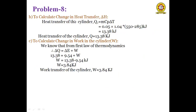Second, calculate heat transfer: Q = mCpΔT = 0.05 × 1.01 × (550 - 285) = 13.38 kJ. Third, calculate work transfer using first law: ΔQ = ΔE + W, so W = Q - ΔE = 13.38 - 9.54 = 3.84 kJ. Work transfer of the cylinder is 3.84 kJ.